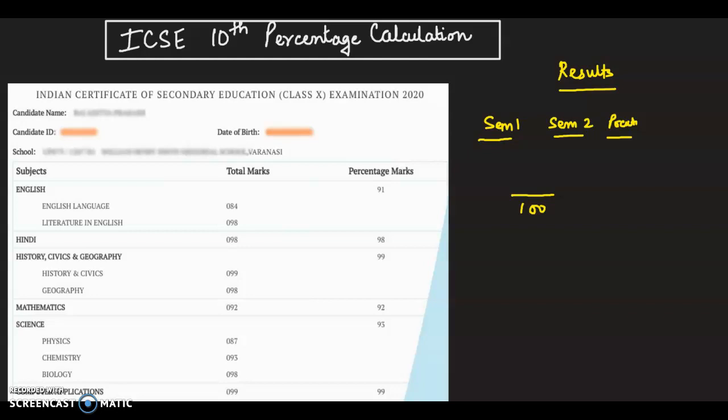Now, when you calculate your percentage for 10th, you have to add top 5 subjects. And English is a compulsion here. You will have to add English marks no matter how low you have scored. In this case, there are 1, 2, 3, 4, 5, 6 subjects. If you have 6 or 7 subjects, that doesn't matter. You still have to take the top 5 subjects.